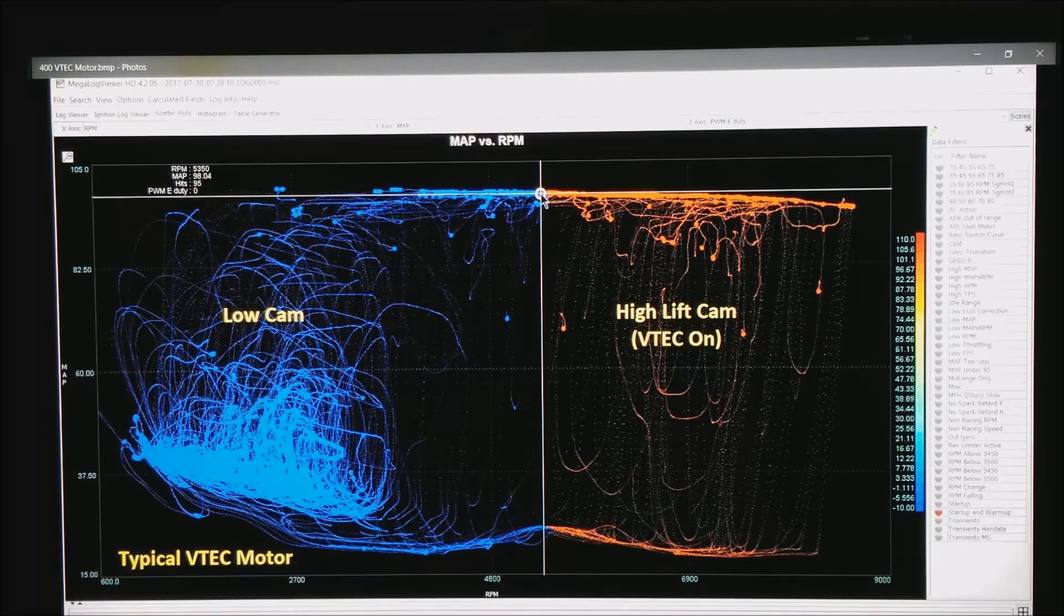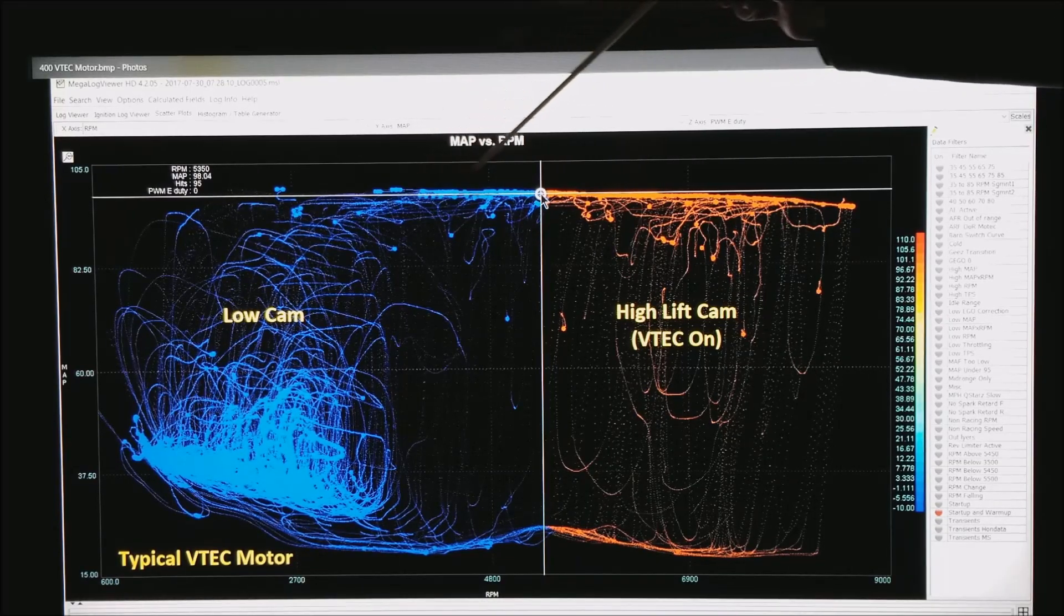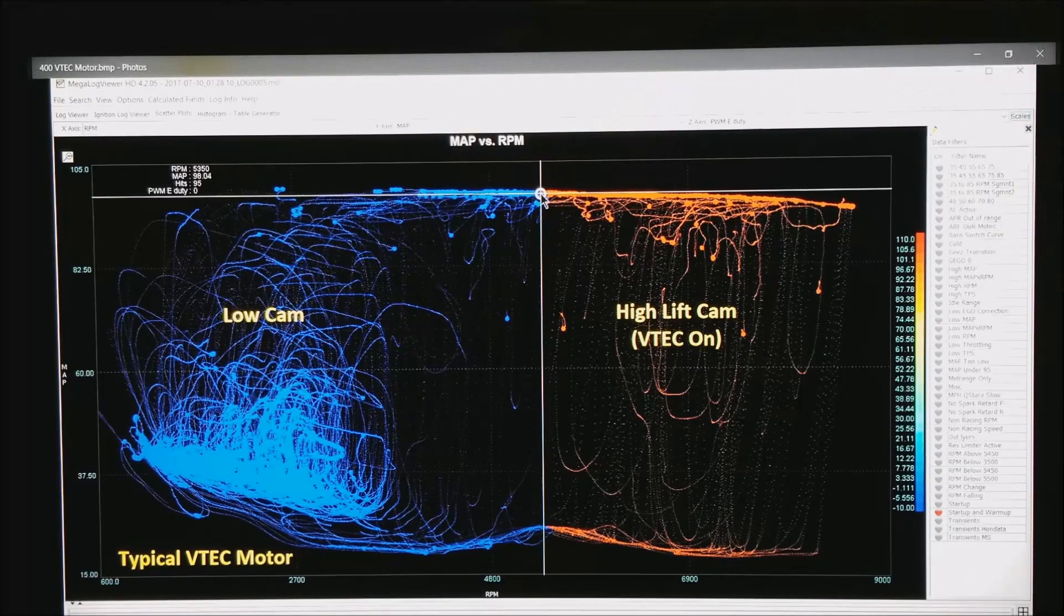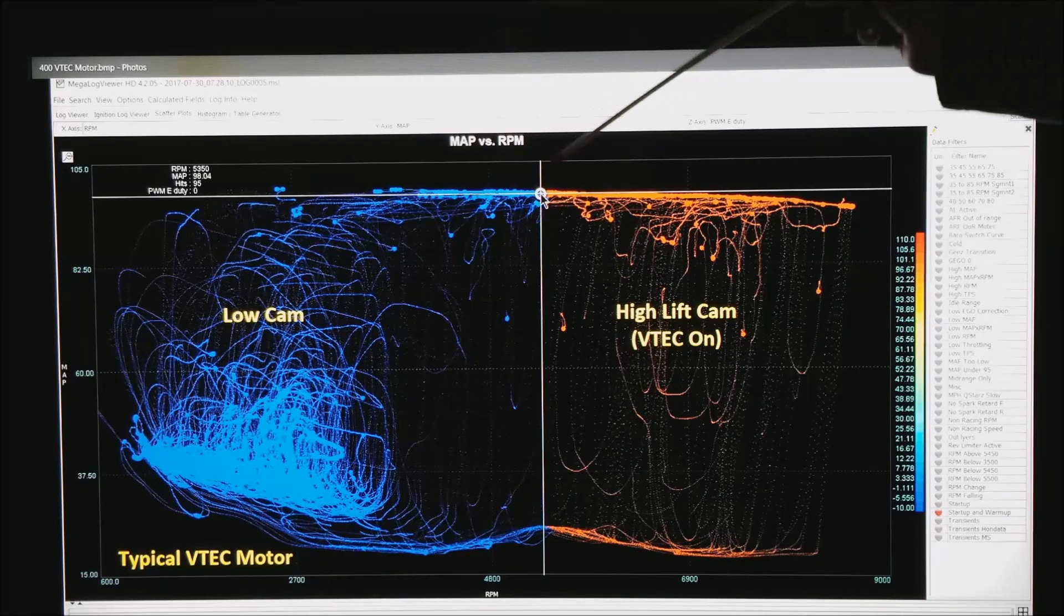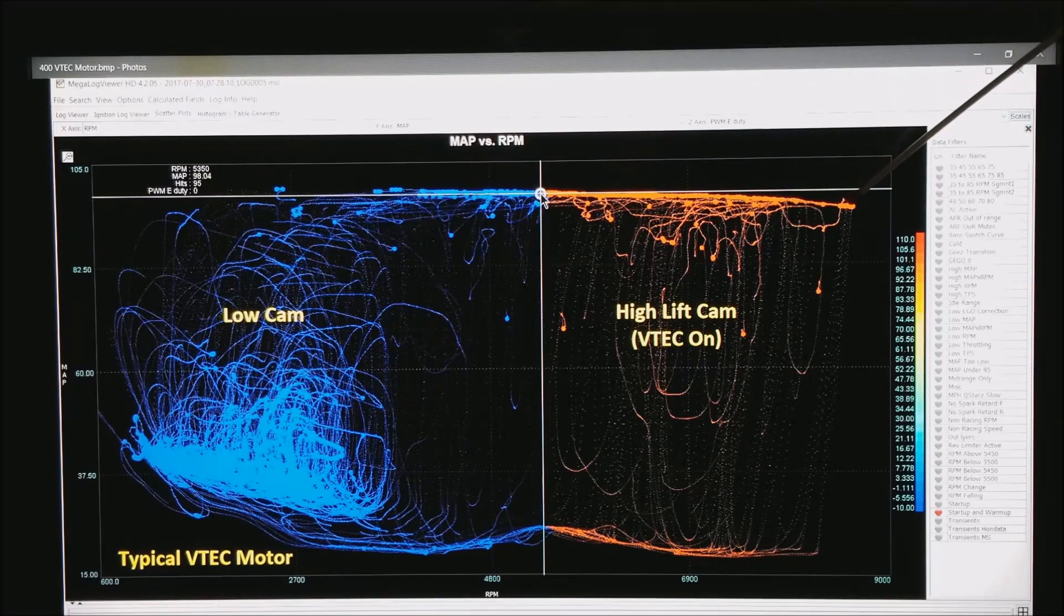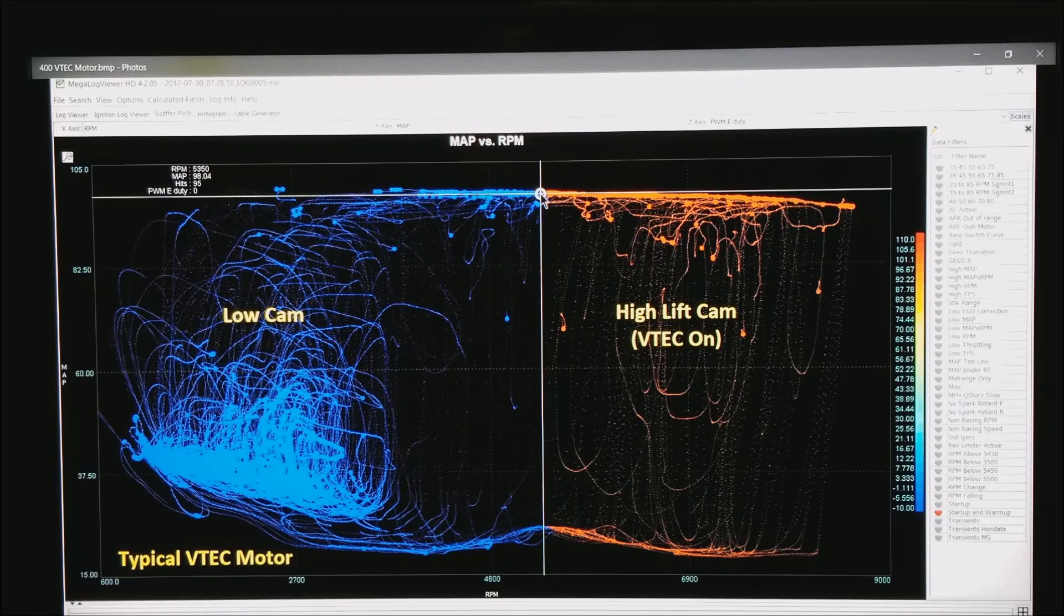The other thing to notice here is this particular motor runs right at 100 kPa in the intake until the VTEC opens and then you can see the MAP slowly taper off to about 97 kPa.